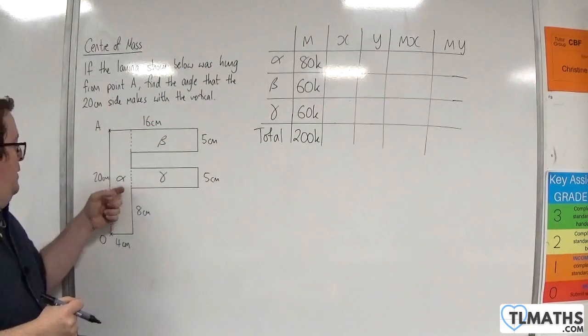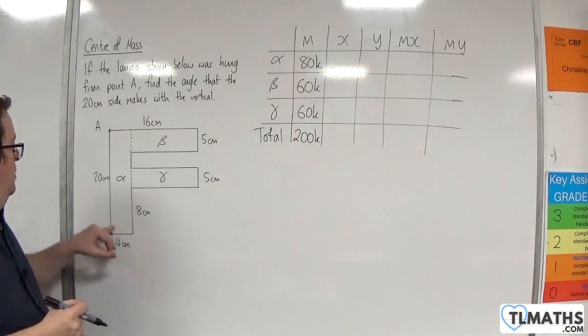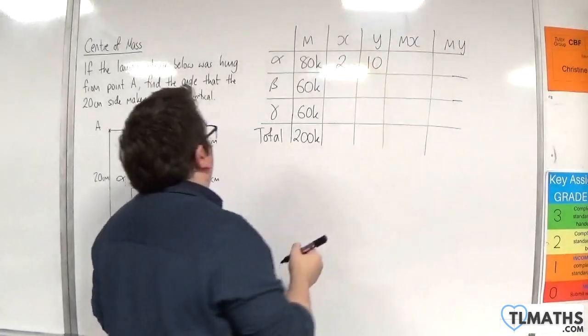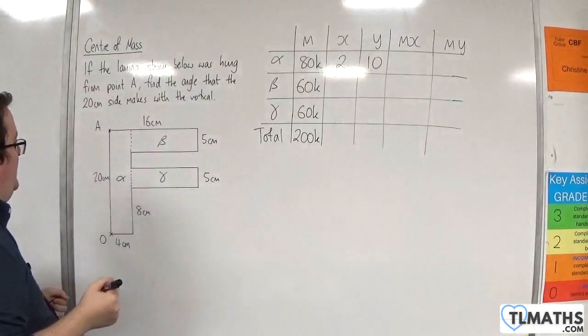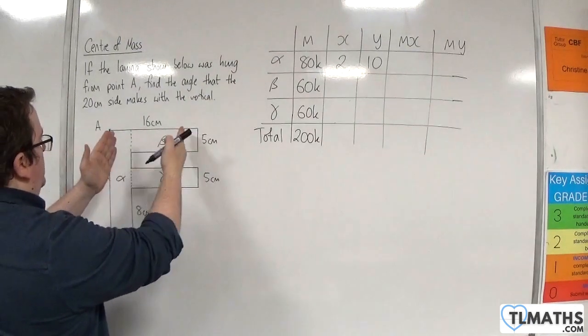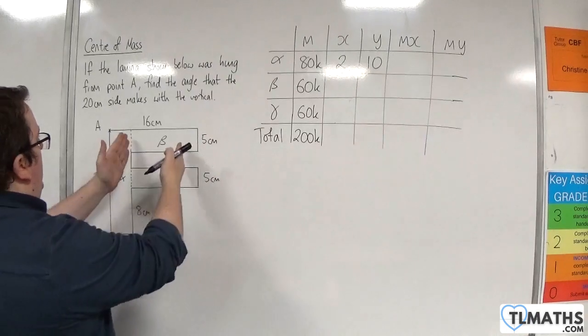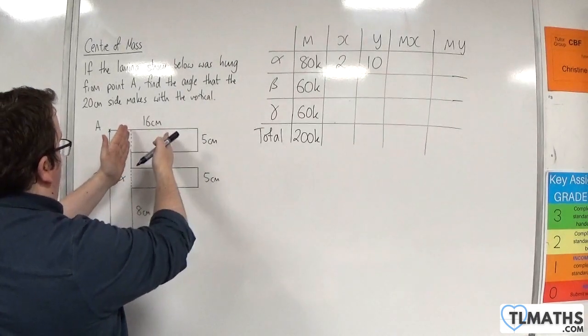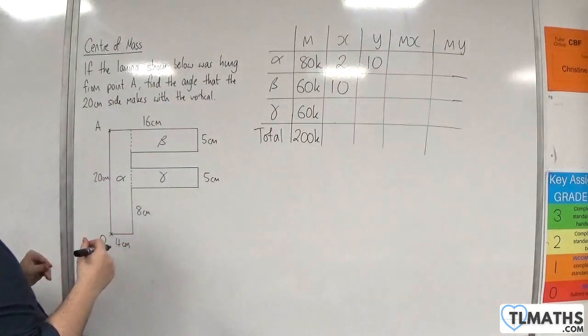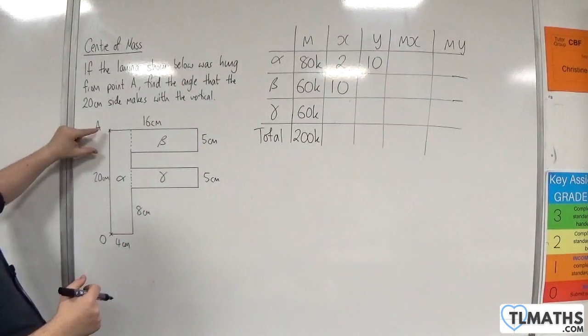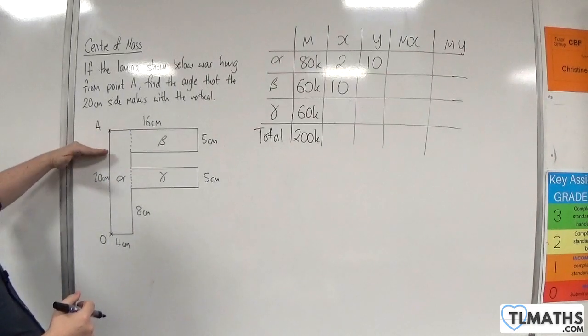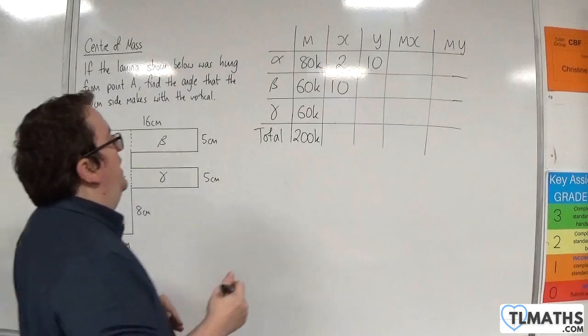Now, the center of mass of alpha is going to be 2 by 10. So 2, 10. For beta, so that's 4, and that's going to be 12 left. So 6 along from there, so that's 10 in the x. And in the y, that's 5 centimeters down from 20, so we're going to go 15 plus 2.5, so 17.5.